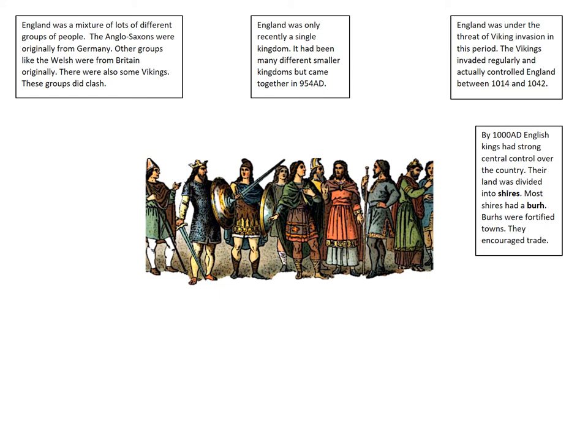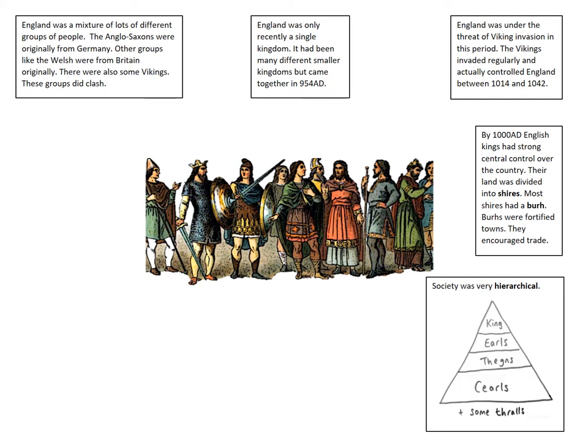By the year 1000 AD, Anglo-Saxon kings had good strong central control over the country with a strong government. The land was divided into shires, and most of those shires had a burh — a fortified town — and those towns encouraged trade. So England was arguably thriving at this time. In addition to that, society was very controlled, centralised and hierarchical, meaning there was a strong hierarchy where everybody had their place.